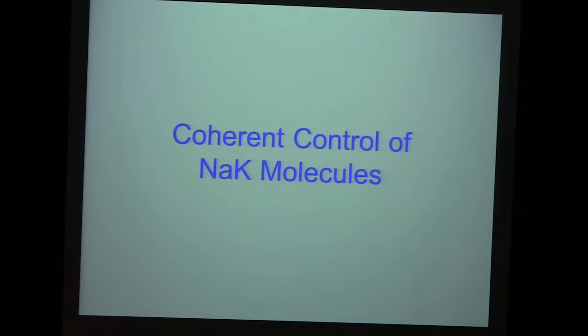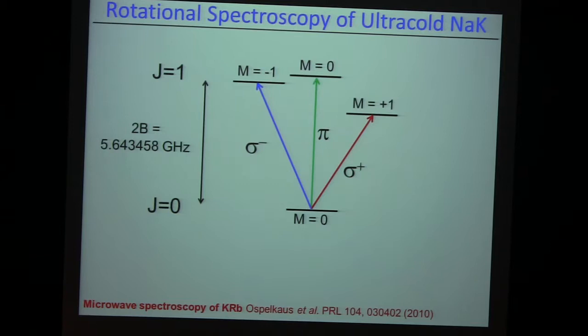Now I will switch to the coherent control story of the internal states of these NaK molecules, which hopefully will allow us to learn something about these collisions. What can we do with these molecules? It's a 60–80 year old story where you can drive, for example, rotational transitions from J equals zero to J equals one. You might say there are three possible transitions according to the three different alignments of the rotational wave function. There are actually more because you have coupling between the nuclear spin and rotation.